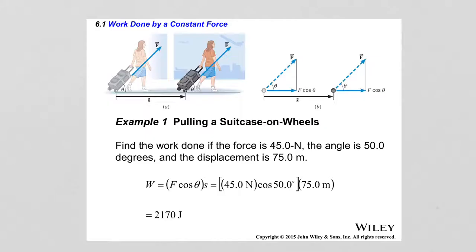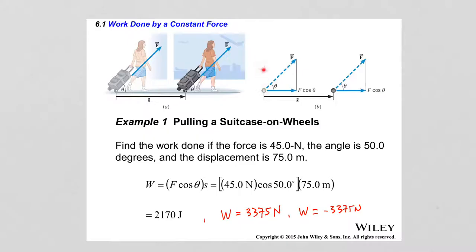If the force were in the same direction as the displacement — meaning the angle between the two vectors was zero — then the work done would have been 3,375 joules. If the force were directed opposite, at 180 degrees to the displacement vector, then the work done would have been negative 3,375 joules. The difference between these values and the actual work comes from the portion of the force perpendicular to the displacement — the y-component — which does no work.